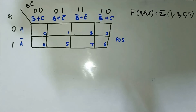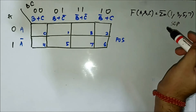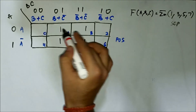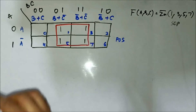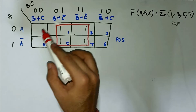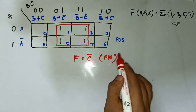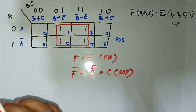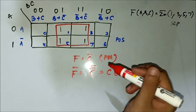For the fifth question, we have the SOP expression given in terms of minterm values 1, 3, 5, and 7. We map these and form a quad. For identification of common variables, there is nothing common on the horizontal side; on the vertical side we have C̄ common. So F equals C̄ in POS form. Taking the double complement gives us C, which is the SOP form. This completes the simplification of SOP expressions using POS KMAP for three-variable expressions.